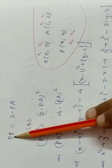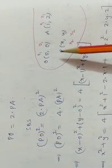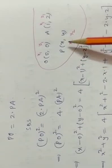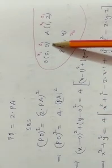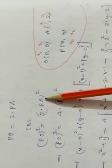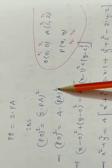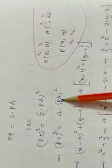Using the distance formula, to avoid square roots we are squaring both sides. For PO: first point x1, y1 is O; second point x2, y2 is P. So x minus 0 whole square plus y minus 0 whole square equals 2 squared, which is 4, into PA squared.